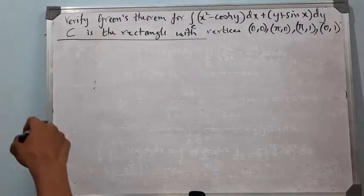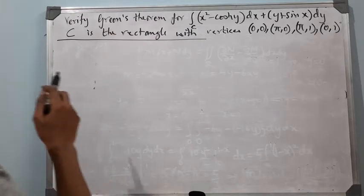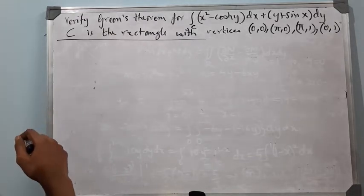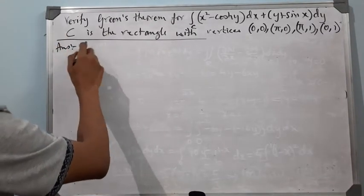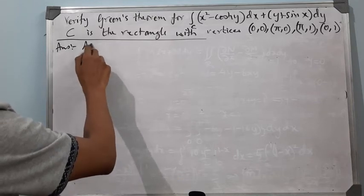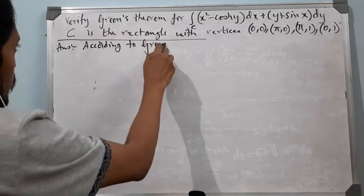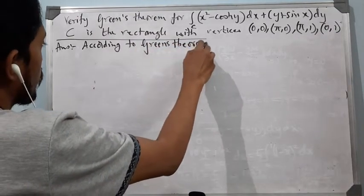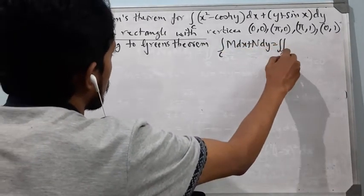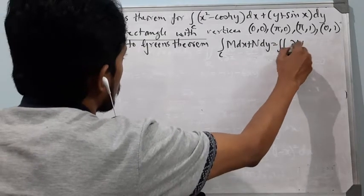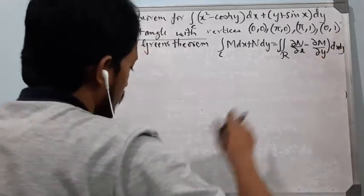Now we consider another example. Verify Green's theorem for the integral of (x² − cosh(y)) dx + (y + sin(x)) dy. Green's theorem states that the integral along C of M dx + N dy equals the double integral over R of (∂N/∂x − ∂M/∂y) dx dy.